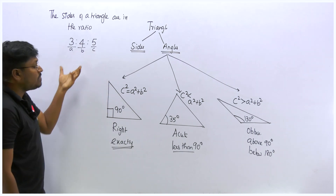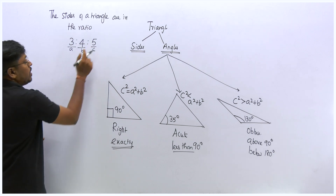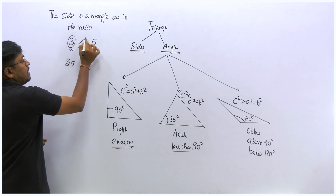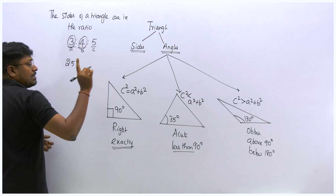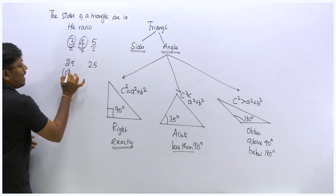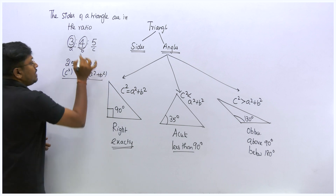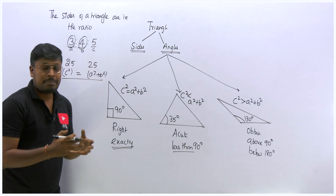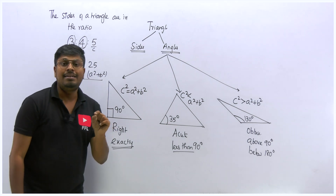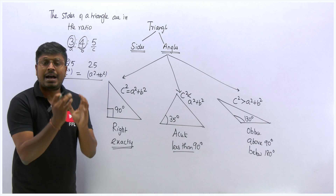Let's check the example 3:4:5. Here c² = 25, and a² + b² = 9 + 16 = 25. Since c² equals a² + b², the triangle formed by the sides in ratio 3:4:5 is a right angle triangle. This is the way we use the sides to find what type of triangle is formed.